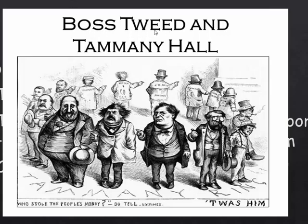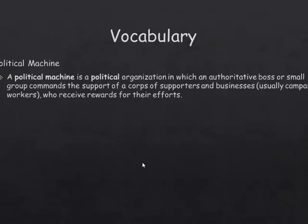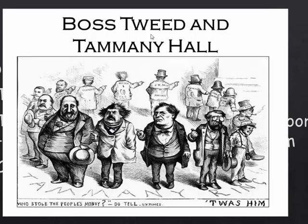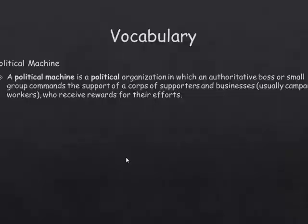One of the most famous corrupt politicians was the mayor of New York City — his name was Boss Tweed, actual name William Marcy Tweed. Tammany Hall was the Democratic headquarters in New York City. A famous cartoon by Thomas Nast shows the politicians all blaming each other for stealing government money. When you look at it, they all did it — each one pointing the finger at someone else. You might want to remember William Marcy Tweed as a very corrupt politician.